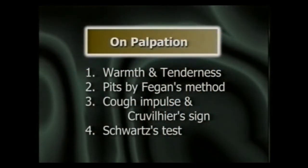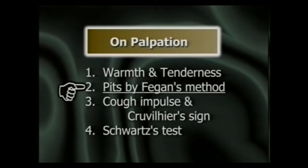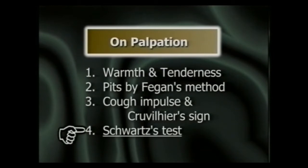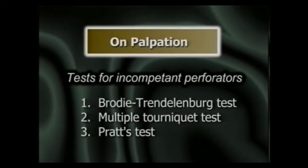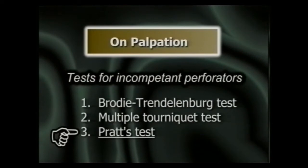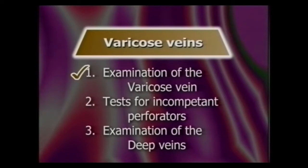To revise — on palpation, we first palpated the length of the vein for warmth and tenderness. Then we emptied the vein and palpated the deep fascia under it by Fagan's method for palpable pits. Then we tested for cough impulse and Cruveilhier sign at the saphenous opening and performed the tap test or Schwarz test. Then we performed the special tests for incompetent perforators: Brody-Trendelenburg test, Multiple Tourniquet test and Pratt's test. Thus we have completed the examination of the varicose veins and the tests for incompetent perforators.